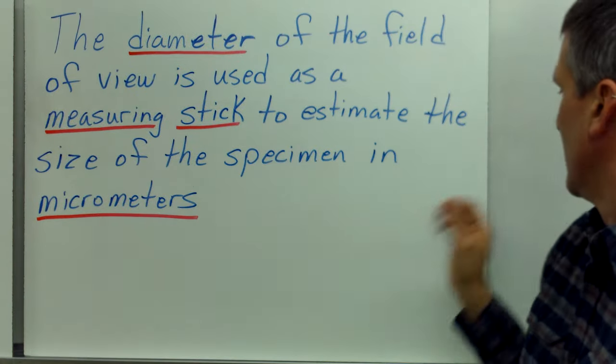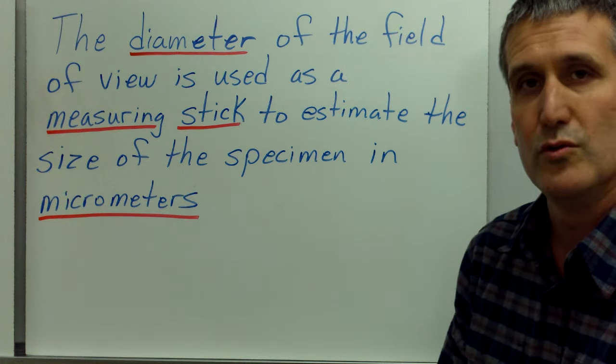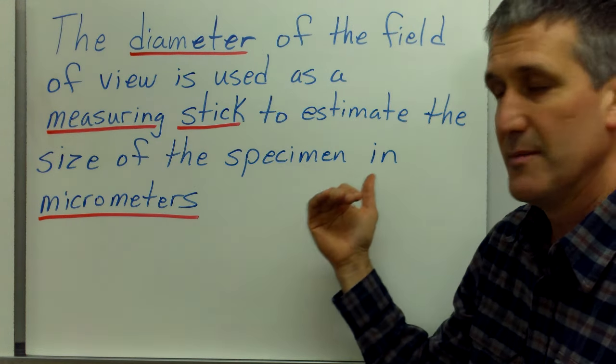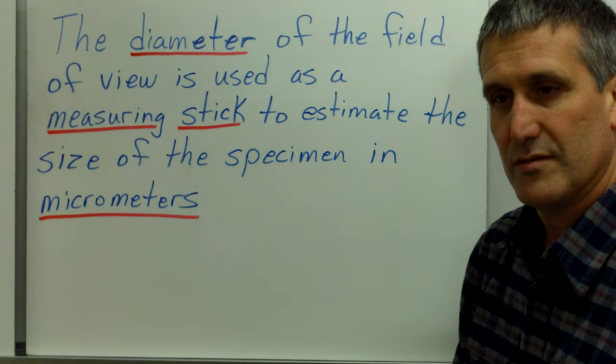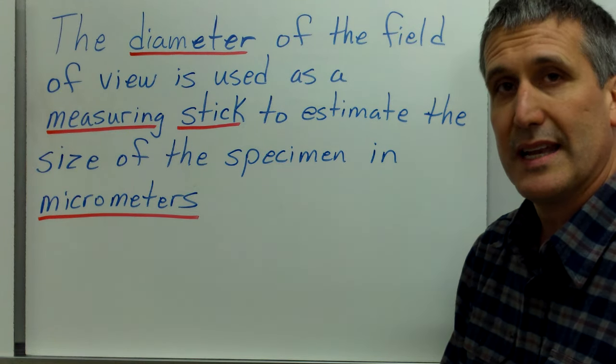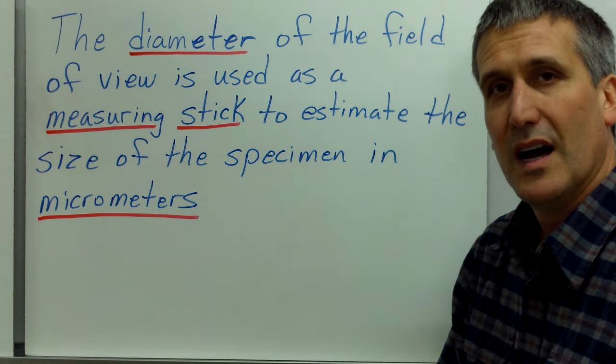So in summary, the diameter of the field of view is used as your measuring stick to estimate the size of the specimen in micrometers. It's really not as complicated as it seems once you understand this basic concept. I hope that was helpful.